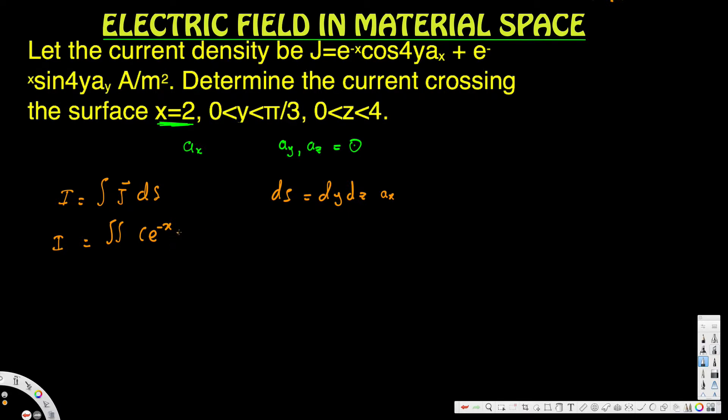e to the negative x cos 4y ax plus e to the negative x sin 4y ay, and that's dy dz in the x direction.